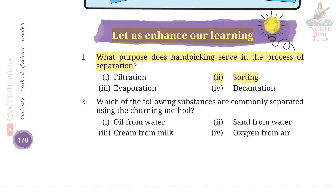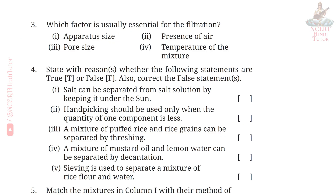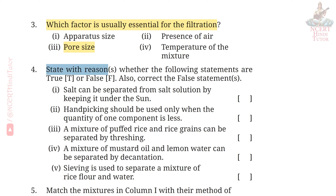Question 2: Which of the following substances are commonly separated using the churning method? Answer: Cream from milk. Question 3: Which factor is usually essential for filtration? Answer: Pore size.